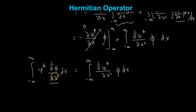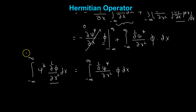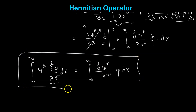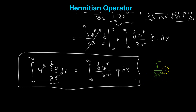We started out with the integral of psi-star times del-squared phi over del-x-squared dx — that is, the operator acting on phi — and we ended up with the operator acting on psi-star, the conjugate of psi. Since our Hermitian condition is fulfilled, we can say that del-squared over del-x-squared is also Hermitian.